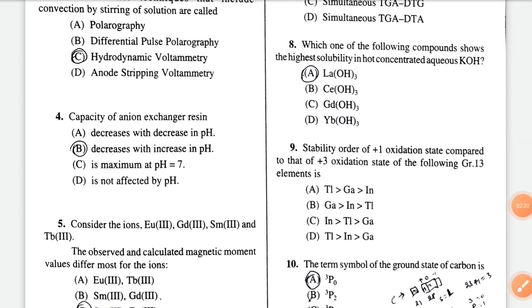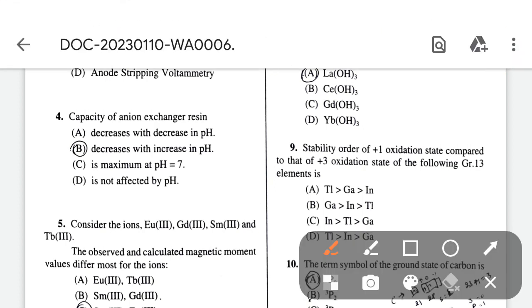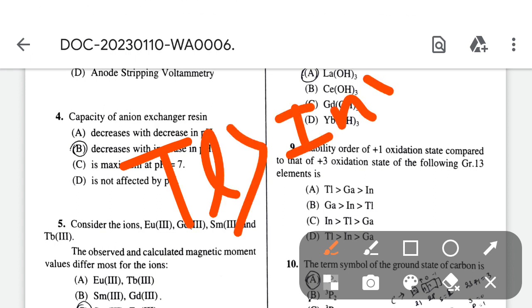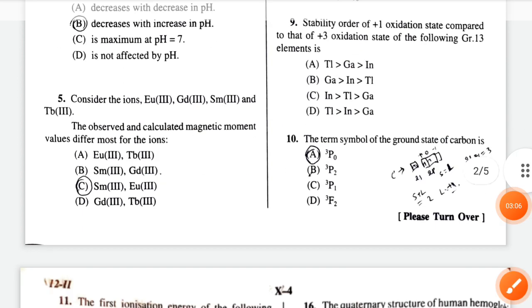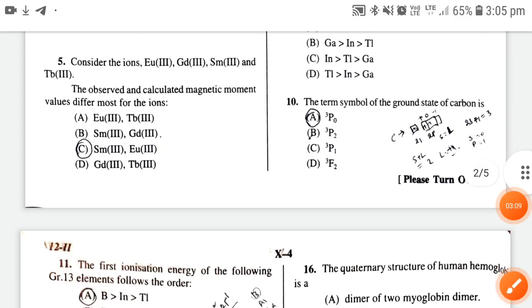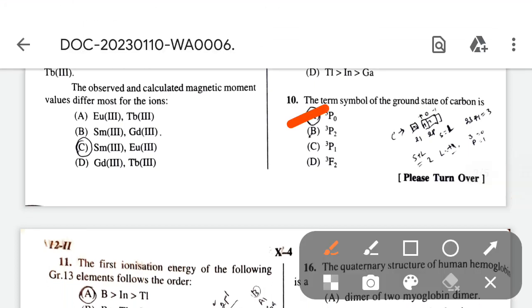Stability order of +1 oxidation state compared to +3 oxidation state for group 13 elements: the correct option is first Tl, then In, then Ga. So the correct option is option D. Next, the term symbol of ground state of carbon is option A.